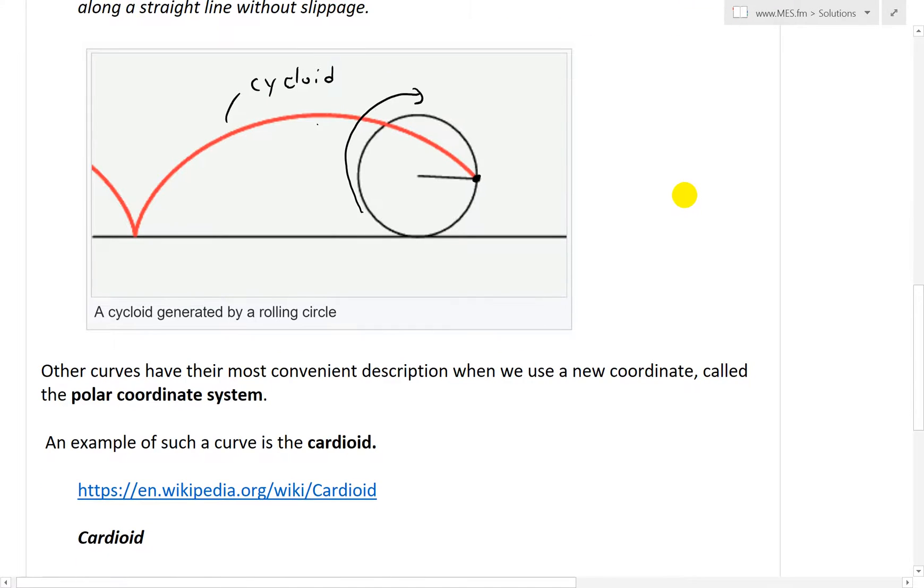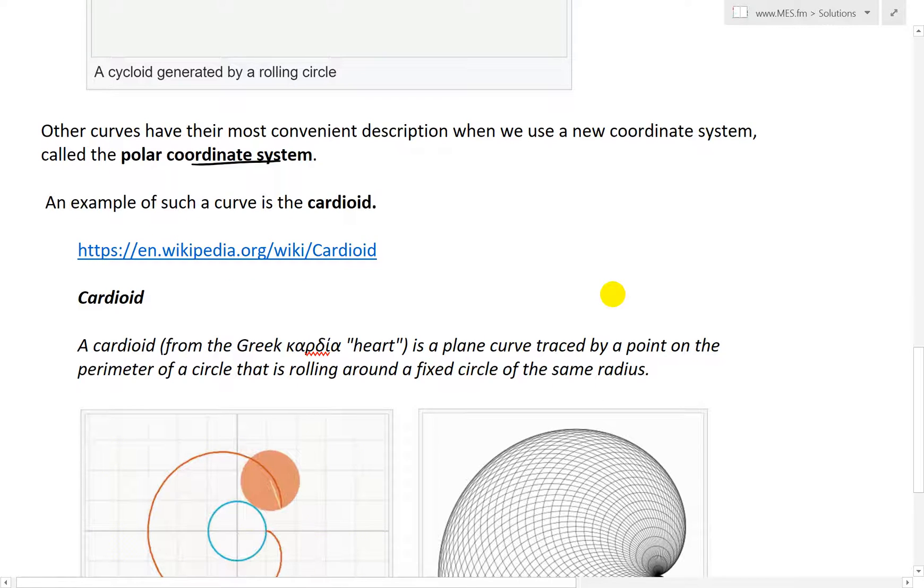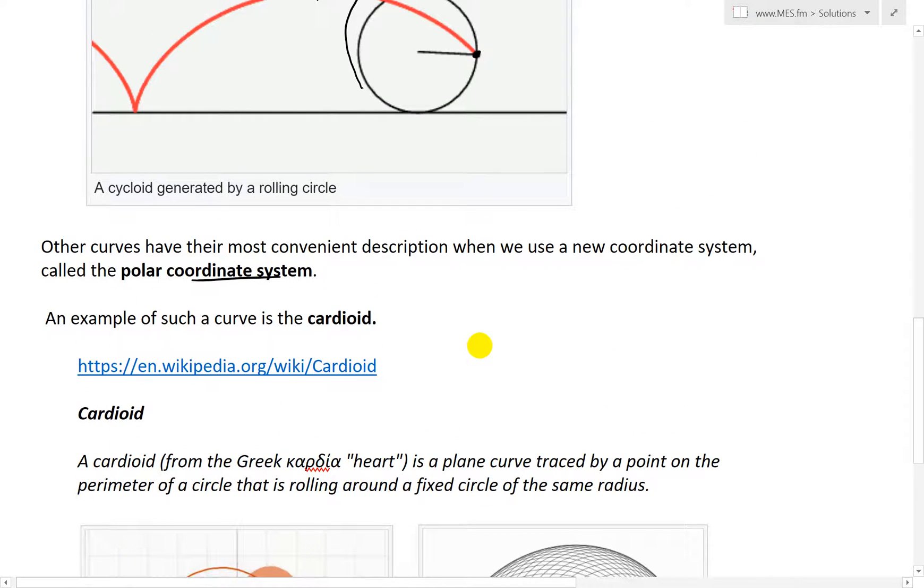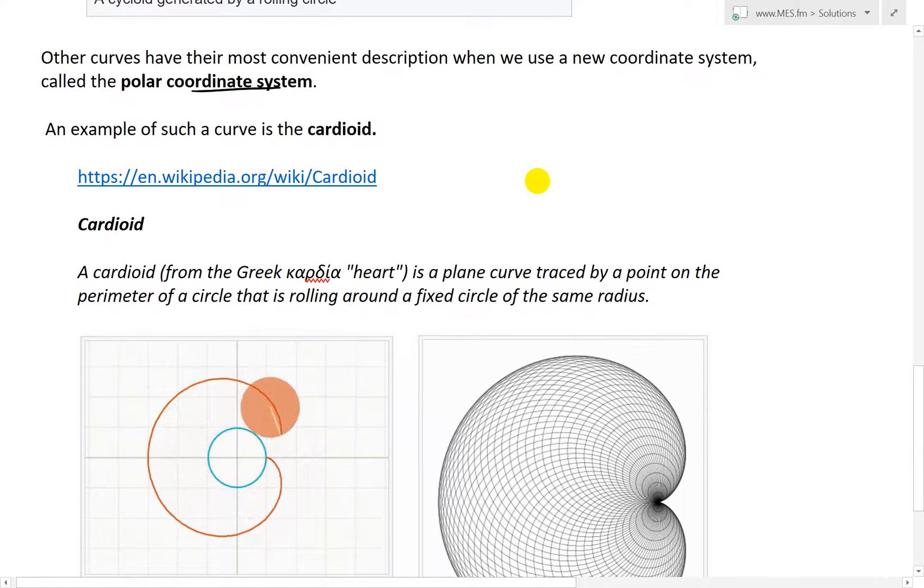So that's an example of it. Now let's go to the polar coordinate system. Other curves have their most convenient description when we use a new coordinate called the polar coordinate system. An example of such a system, this one's better for graphs that are more circular in nature, and we'll get to examples on these in later videos.